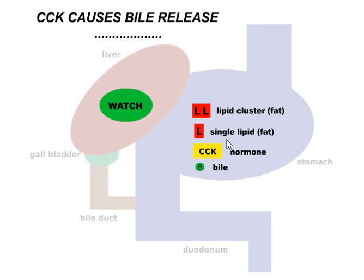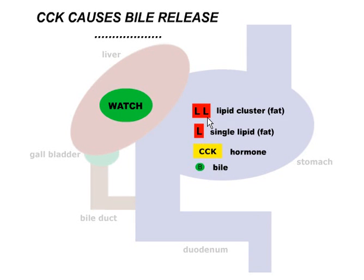Over in the stomach, when you have fats in your diet, as we inevitably do, a lot of the lipids are clustered together in large globules illustrated by this, whereas a single lipid that makes up the globule would be represented by just one L here. The hormone CCK is going to be involved, and you'll see how it stimulates the release of bile. Bile is going to cut this lipid cluster down so we have single lipids, and then lipase, the enzyme, will act in the duodenum and break down the lipids for us.